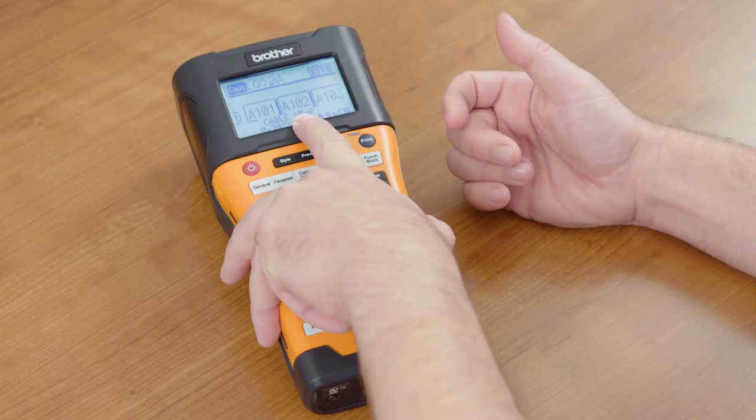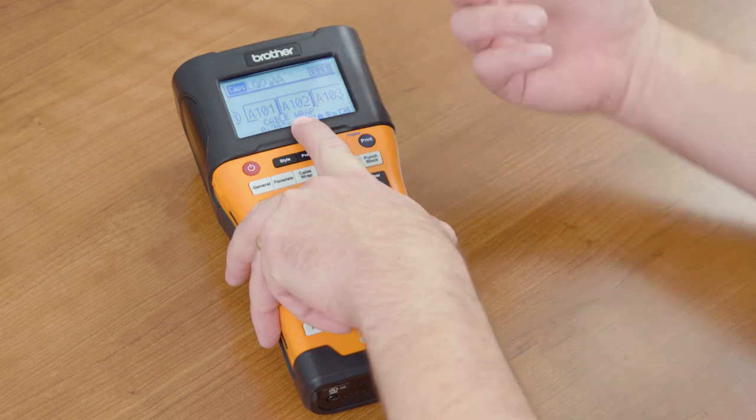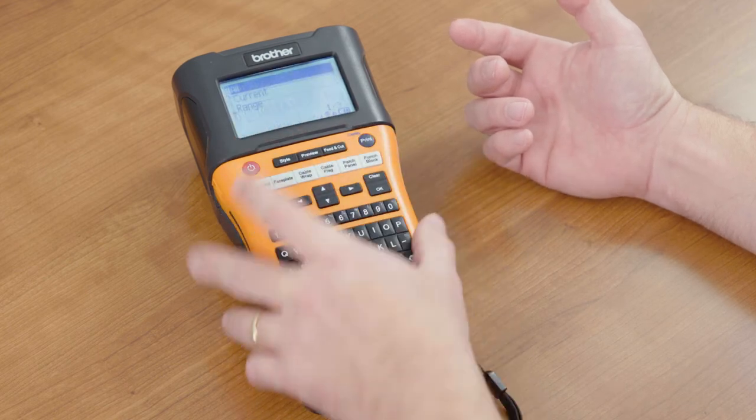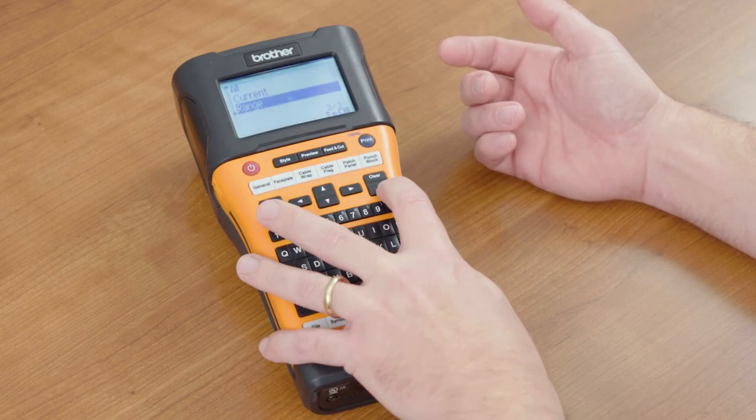Now you can see our cable wrap format is selected here and all the labels will print in that cable wrap format, AWG 12 gauge. Go ahead and print a few labels for this example.